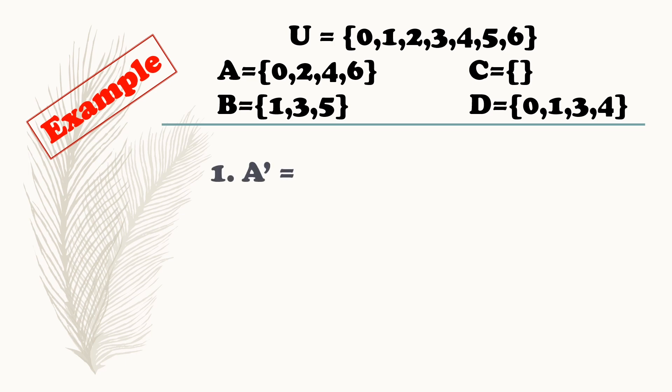First, get the complement of set A. So tingnan natin sa set A. What are the elements? 0, 2, 4, 6. Ibig sabihin, yung elements ni set A natin, ano yung nawawala dun na nasa universal set? 1, 3, 5. So the complement of set A is equal to {1, 3, 5}.